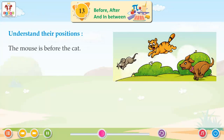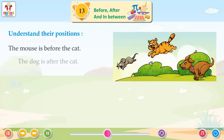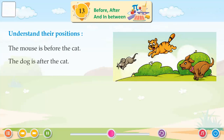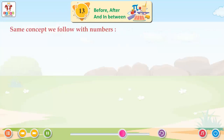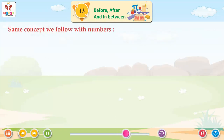The mouse is before the cat. The dog is after the cat. The cat is between the mouse and dog. The same concept we follow with numbers.